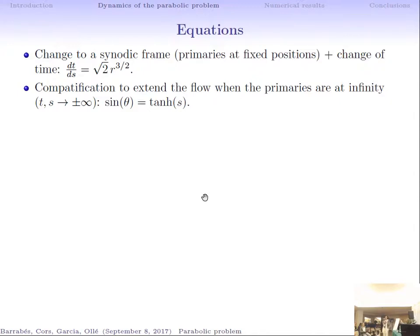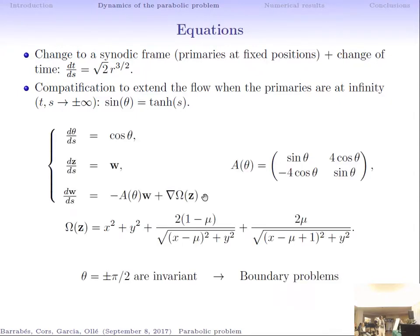After the change of variables, we obtain a non-autonomous system because the primaries are in parabolic orbits. This is a two-and-a-half degree of freedom system. To transform it into an autonomous system, we introduce a new variable theta, where sin(theta) equals tanh(S), with S being the time. When S tends to ±infinity, theta goes from -π/2 to +π/2.